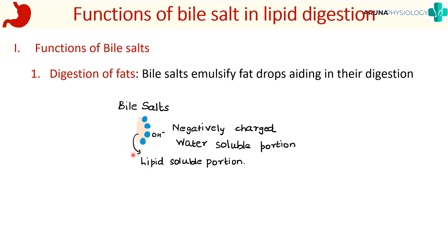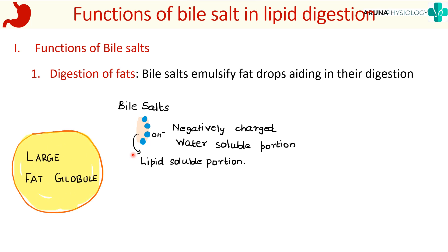Our dietary fat that has to be digested is usually in the form of a large fat globule. For the enzymes to act on this fat globule and digest it, it has to be broken down, because our enzymes are water soluble. If the enzymes just act on the surface of this large fat globule, it is not going to be digested easily. So we need to break this fat globule into many small globules.